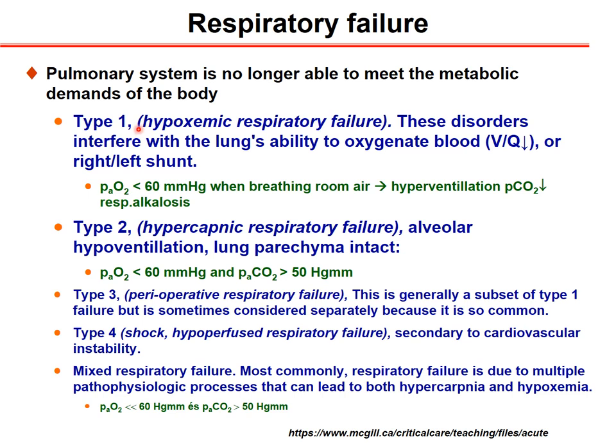This is an incomplete respiratory failure. Type 2 is when not only hypoxia occurs, but hypercapnia persists as well — this is called hypercapnic respiratory failure, where the major problem is alveolar hypoventilation. Usually the lung parenchyma is intact. In this situation, the ABG analysis shows a decrease in oxygen tension and an increase in PCO2 value.